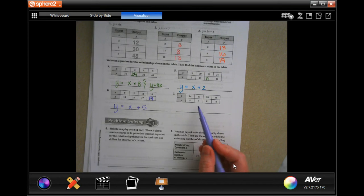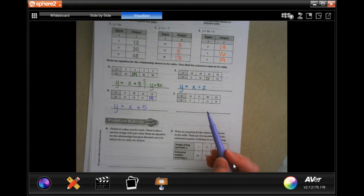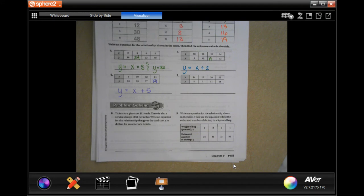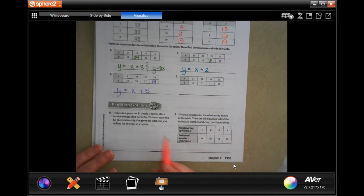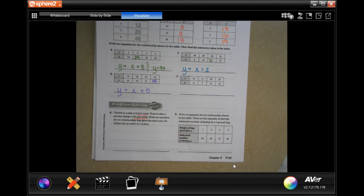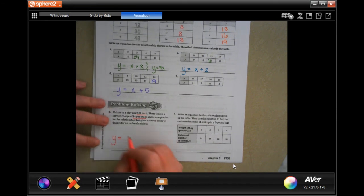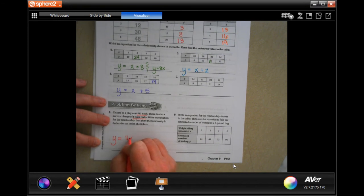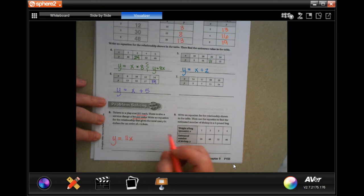So I want you guys to try number seven, you totally can, you guys are so smart. All right, tickets to a play cost 11 dollars each, there's also a charge of four dollars per order. Write an equation for the relationship. It gives the total cost y in dollars for an order of x tickets. So we're going to say y equals 11 per ticket, right, plus four dollars per order.